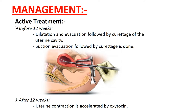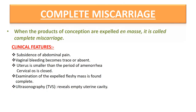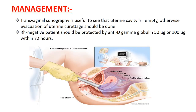If the placenta is not separated, digital separation followed by its evacuation is done under general anesthesia. Complete miscarriage occurs when the products of conception are expelled completely. Clinical features include history of expulsion of a fleshy mass per vaginum followed by subsidence of abdominal pain. Vaginal bleeding becomes scant or absent. Internal examination reveals the uterus is smaller than the period of amenorrhea and slightly firmer. The cervical OS is closed and bleeding is usually scant. Examination of the expelled fleshy mass confirms it is complete, and TVS reveals an empty uterine cavity.